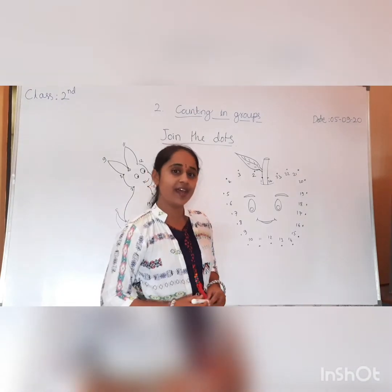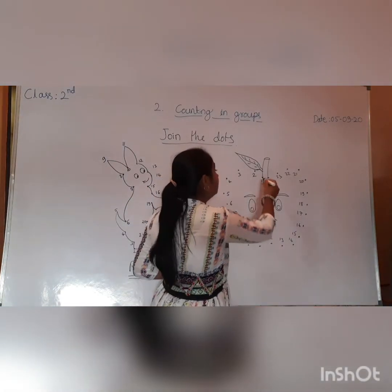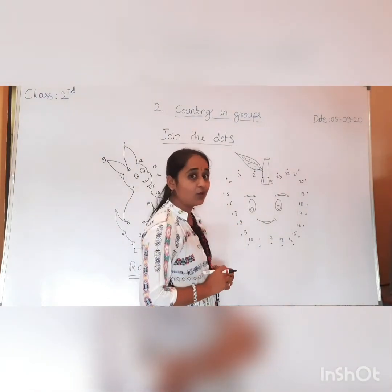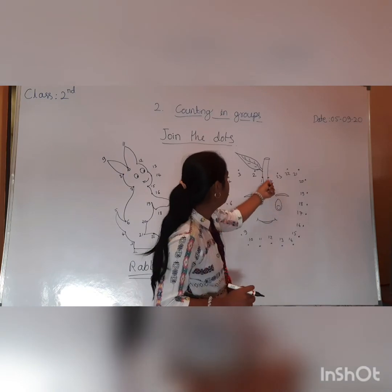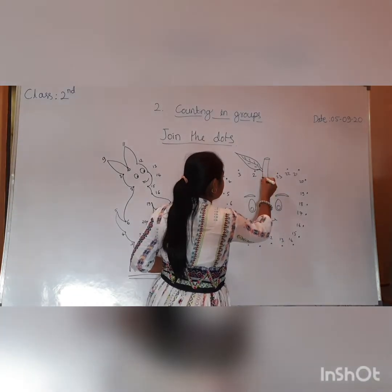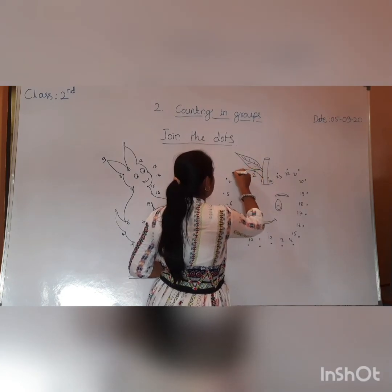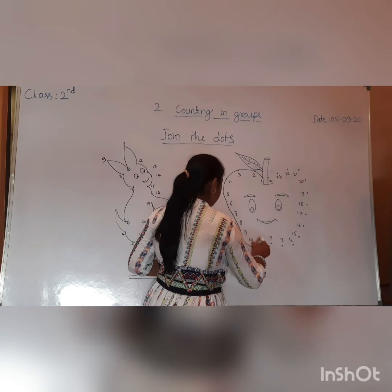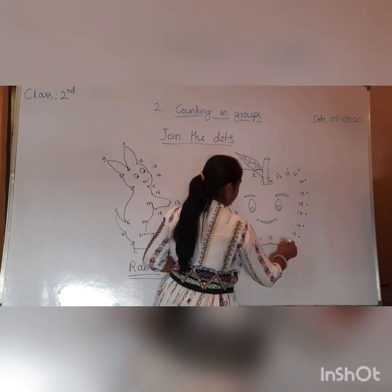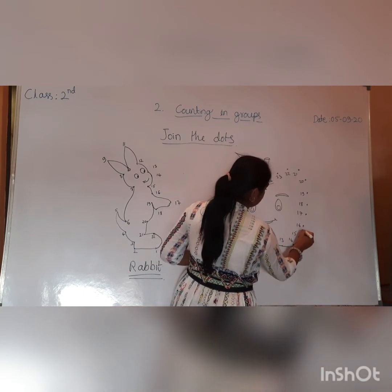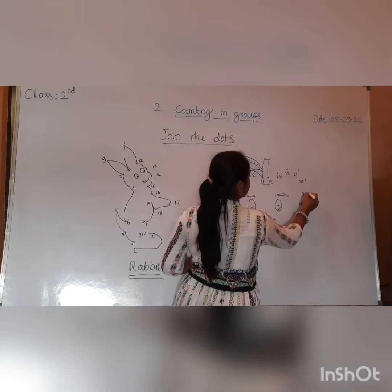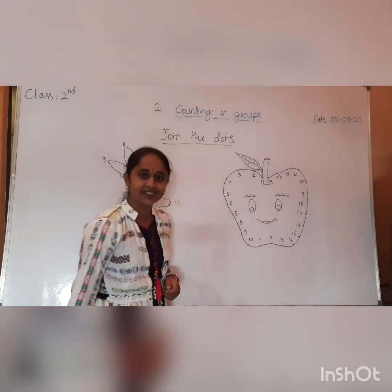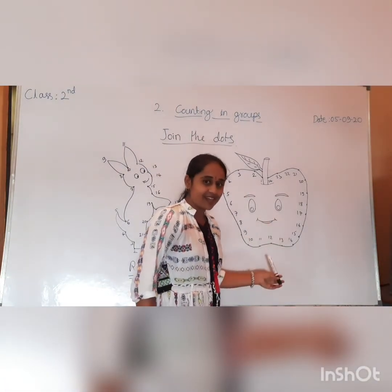Students, let us now do another example. We will join the dots in ascending order. Ascending order means smaller to big number. Which is the smallest number here? 1 is the smallest number. Let's start: 1, 2, 3, 4, 5, 6, 7, 8, 9, 10, 11, 12, 13, 14, 15, 16, 17, 18, 19, 20, 21, 22, 23, 24. What is this? This is an apple.